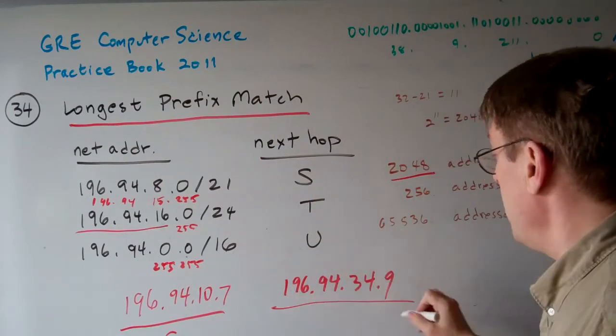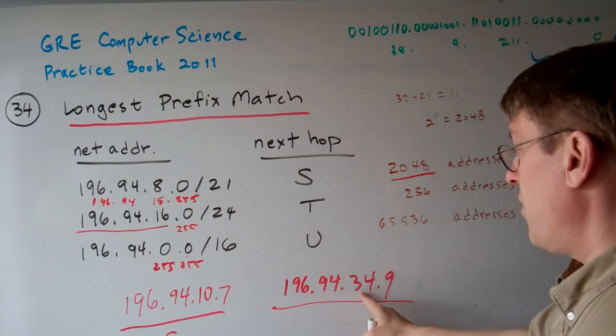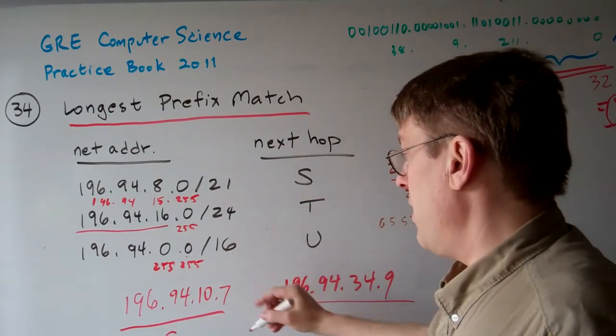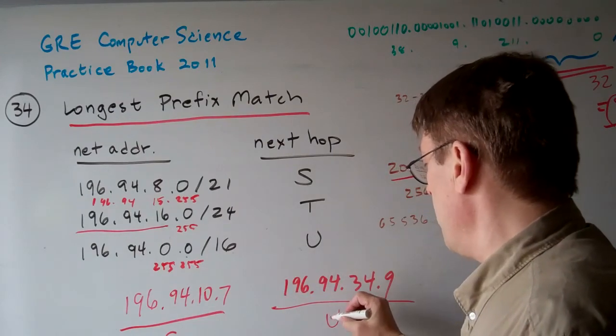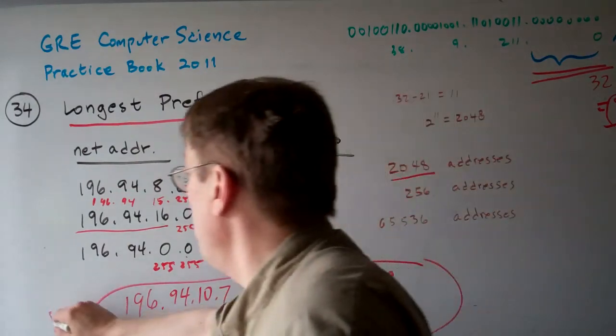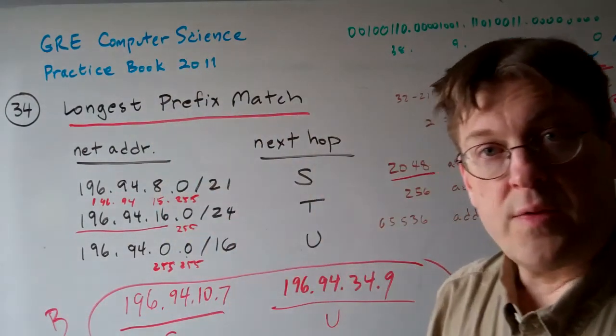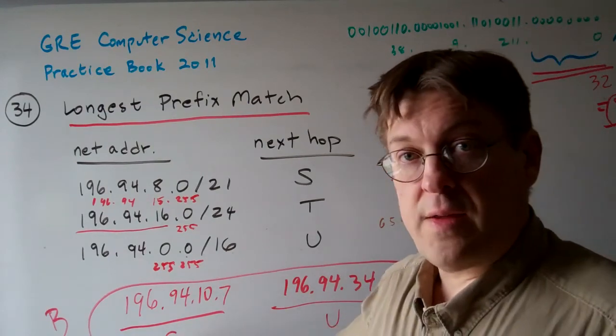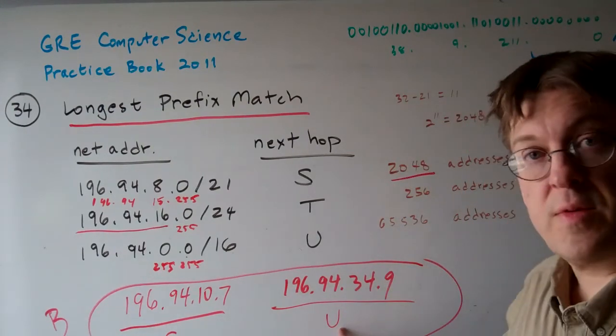And for this one, we have 196.94.34.9. There's only one of them that it fits in, U. So, the answer to question 34 is B. This one fits into S, the next hop is S, and this one, the next hop is U.